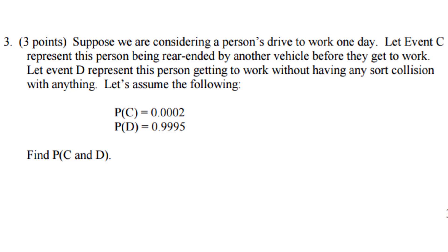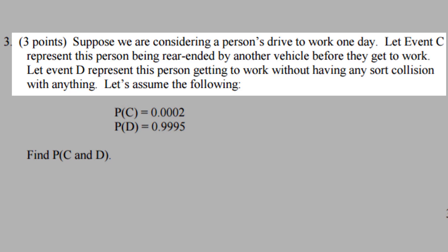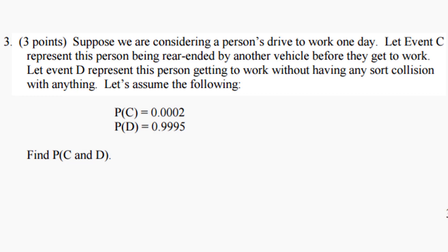The third question on the test is one more question on probability that catches a lot of people off guard. We have event C represent the probability of getting rear-ended on your way to work, and event D the probability of getting to work safe and sound without any sort of collision.